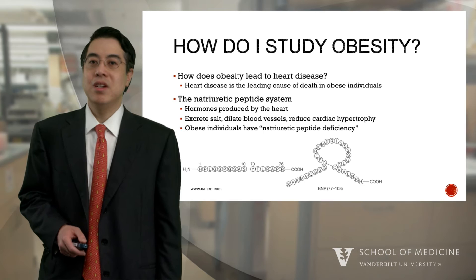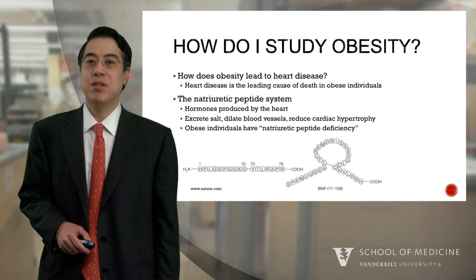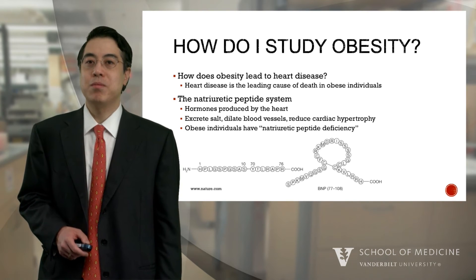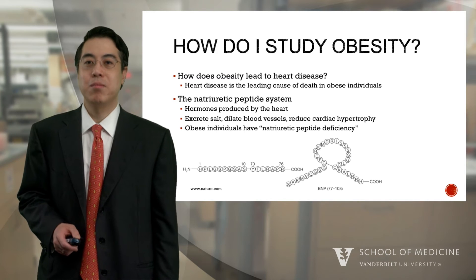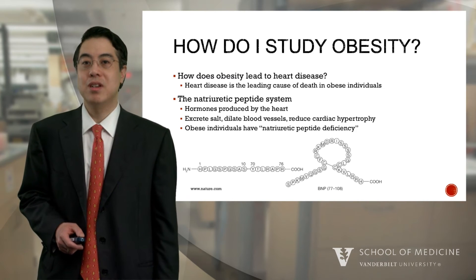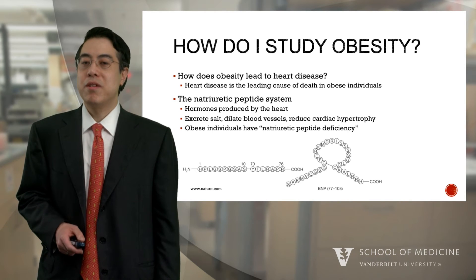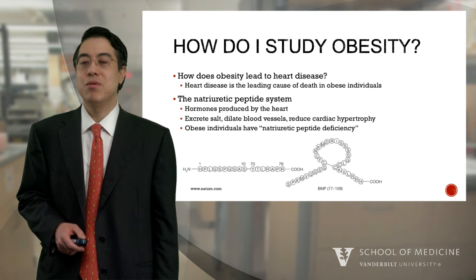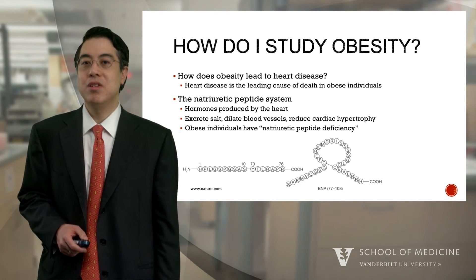My colleagues and I are particularly interested in the natriuretic peptide system. The natriuretic peptides are hormones produced by the heart. They have a variety of beneficial effects, including helping the body excrete salt, dilate blood vessels, and reduce cardiac hypertrophy. One of our findings is that obese individuals have an impaired natriuretic peptide production — in other words, obese individuals have a natriuretic peptide deficiency.